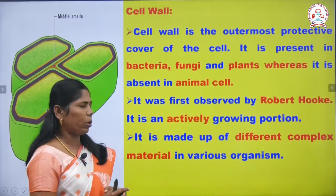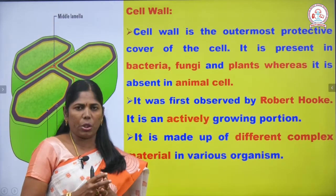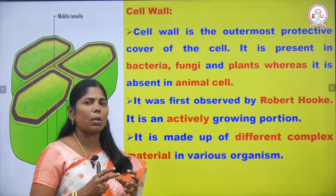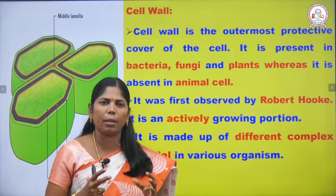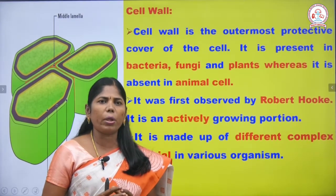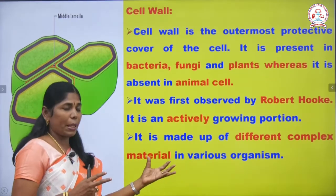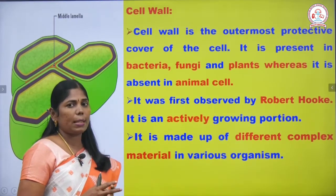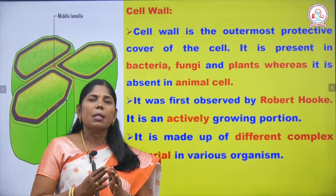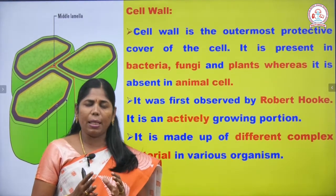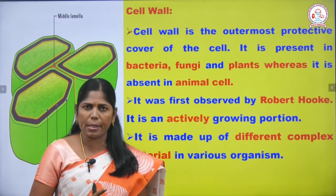The cell wall was first discovered by Robert Hooke. The cell wall is made up of different complex materials in various organisms. Each organism has a defined cell wall material, and the cell wall material differs from organism to organism.